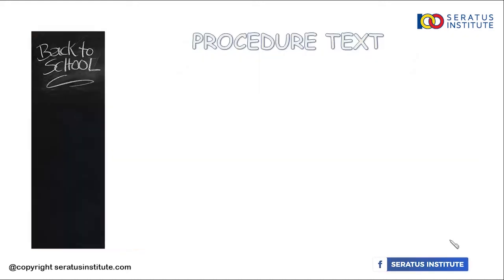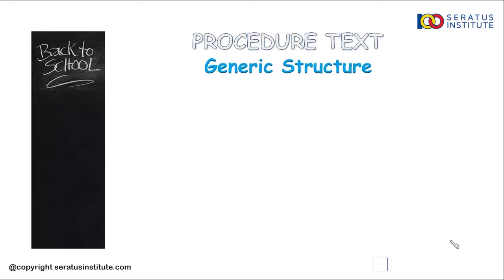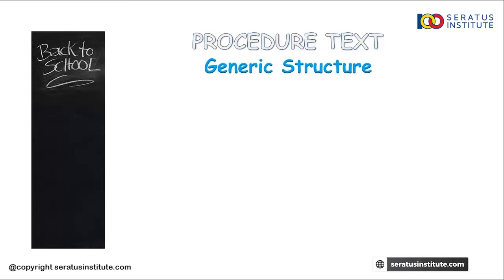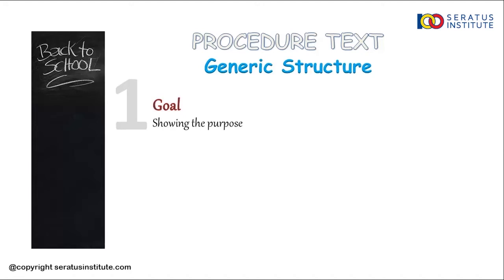Okay, next is the generic structure of procedure text. Generic structure adalah bagian-bagian paragraf yang ada di sebuah teks. Untuk procedure text, ada apa saja di dalamnya? Number one is the goal — it is showing you the purpose of the text. So, you can easily find it in the title of the text. Biasanya, goal ini ada di judulnya ya Sobat Seratus.